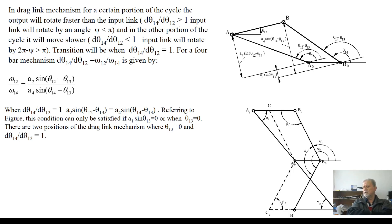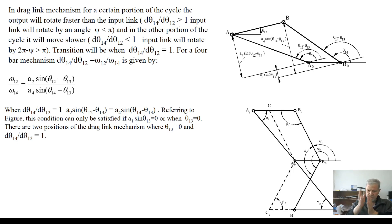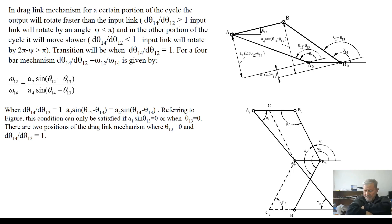There is a transition condition where the output link velocity equals the input link velocity. The transition is when dθ14/dθ12 equals 1, which corresponds to ω12 over ω14 equal to 1. For a four-bar mechanism, the angular velocity ratio ω12/ω14 is given by the standard expression. The angles θ14, θ12, and θ13 are all measured from the fixed link a0-b0 horizontal.